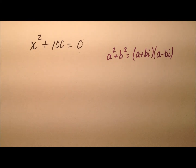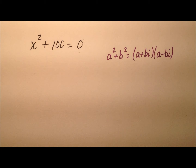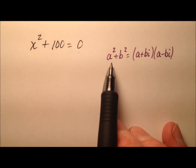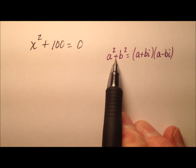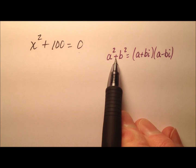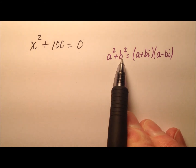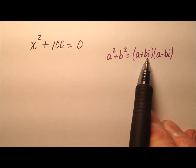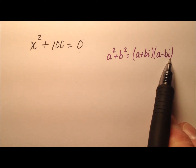In this video, I want to give you an introduction and talk about solving equations by factoring when the solutions are going to be complex in nature. So what we're going to employ here is the sum of squares factorization, which says a squared plus b squared can be factored down into a plus bi and a minus bi.